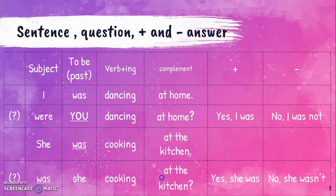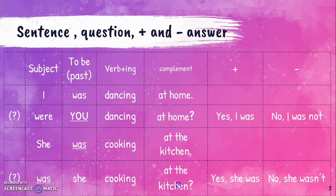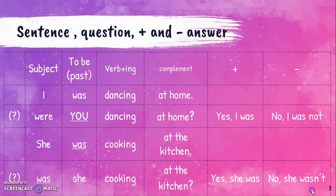Another example: 'She was cooking in the kitchen.' Let's change this into a question. We're going to change the places of the verb to be and the subject: 'Was she cooking in the kitchen?' Yes, she was. In negative form: no, she wasn't. Look, here we have the contractions — 'was not' and 'wasn't' — both are correct.